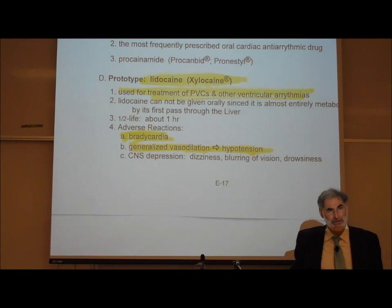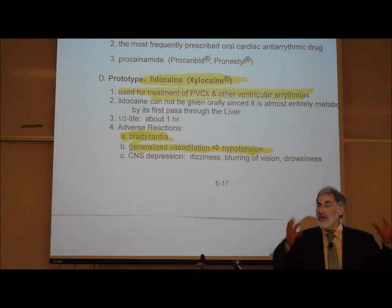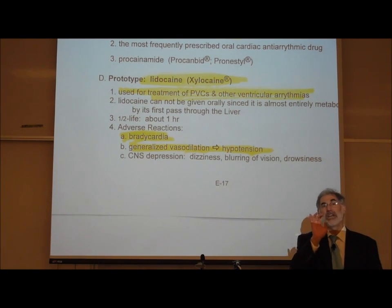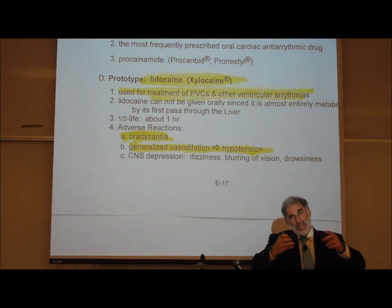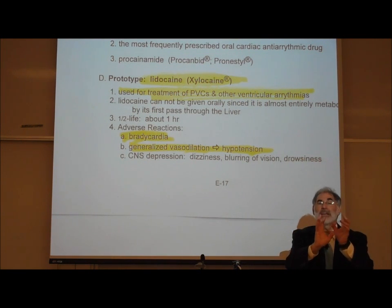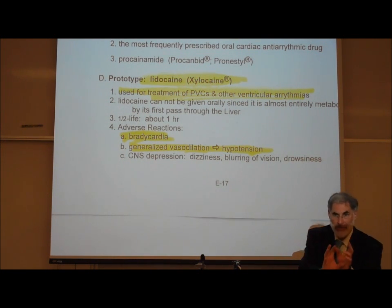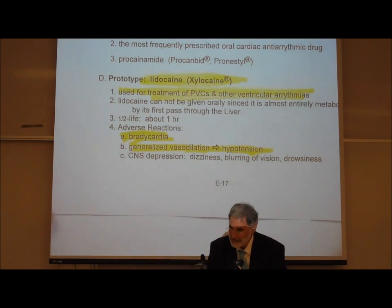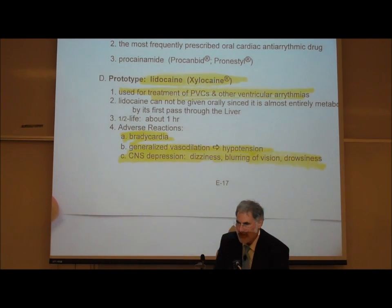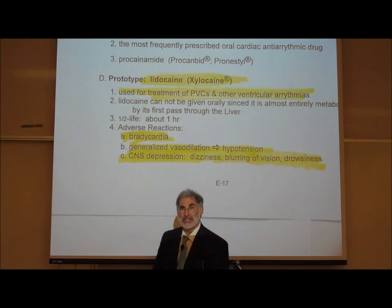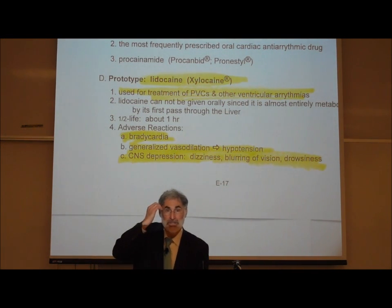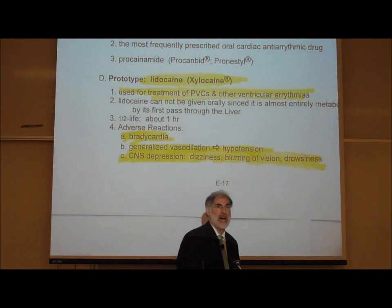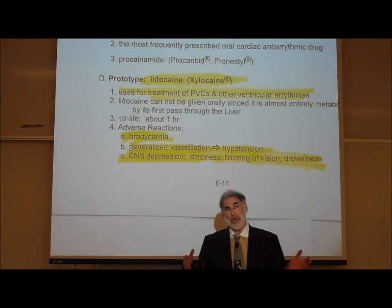All muscle conducts action potentials — there are action potentials in skeletal muscle, heart muscle, and visceral smooth muscle, including vascular smooth muscle in the walls of vessels. If lidocaine slows down the entry of sodium ions into vascular muscle, it also slows down action potentials and contraction, leading to generalized vasodilation. It also slows down action potentials in the brain, causing CNS depression. So when lidocaine goes into the bloodstream, these are the things we worry about.